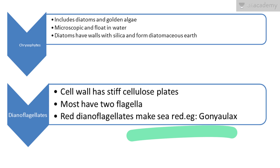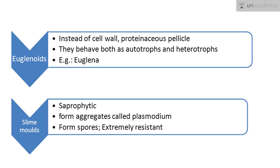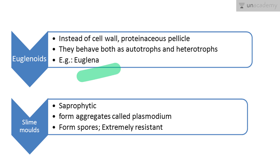Next are euglenoids. Instead of a cell wall, they have a proteinaceous pellicle — a thin layer that supports the cell membrane. They behave both as autotrophs and heterotrophs, meaning they can produce their own food as well as obtain food from others. An example is the euglenoid shown in the first diagram.